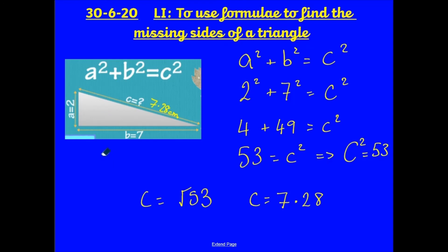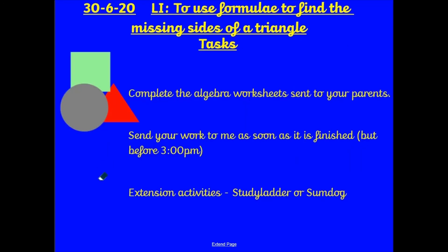So, I can find the missing value of a side of a triangle. Now, it's your turn to have a go at this. Remember to go through your steps. a² + b² = c². When you find what c² is, you will then need to find the square root. And you are allowed to use a calculator at this point. Send your work to me as soon as it is finished, but definitely before 3pm. And there are extension activities on StudyLadder or you can go on to Sumdog if you want. We'll be talking more about this Pythagoras Theorem this morning in our daily Skype session. I look forward to seeing you then. Thank you very much.